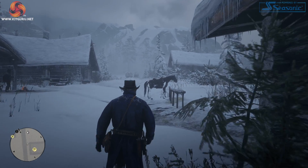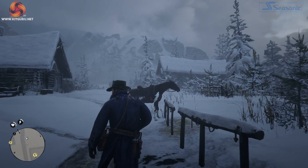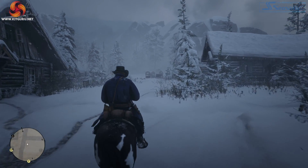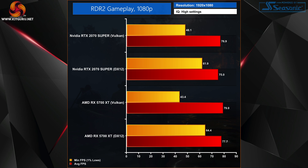Moving to real-world gameplay testing, we benchmarked a manual run at the beginning of story mode while the gang was hiding out in the snowy Colter camp. At 1080p, the average frame rate gap between Vulkan and DX12 is just two percent for both cards. However, the one percent lows are even worse for Vulkan here — the 2070 Super improved by 29 percent with DX12, while the RX 5700 XT saw a whopping 48 percent improvement in one percent low performance.